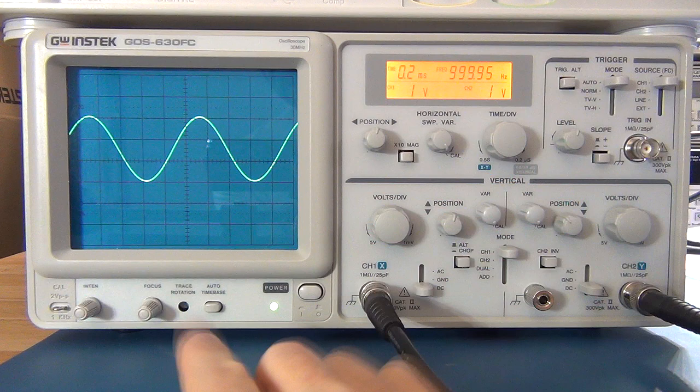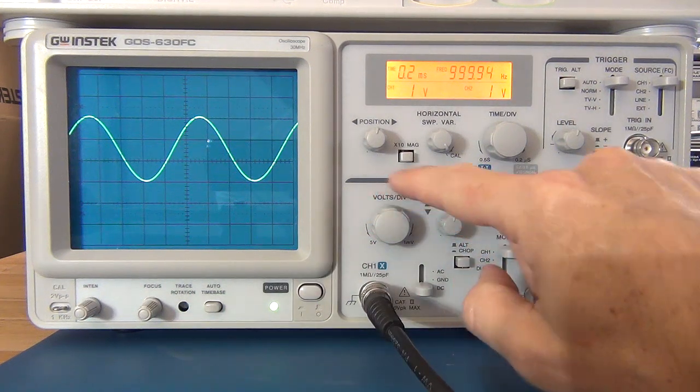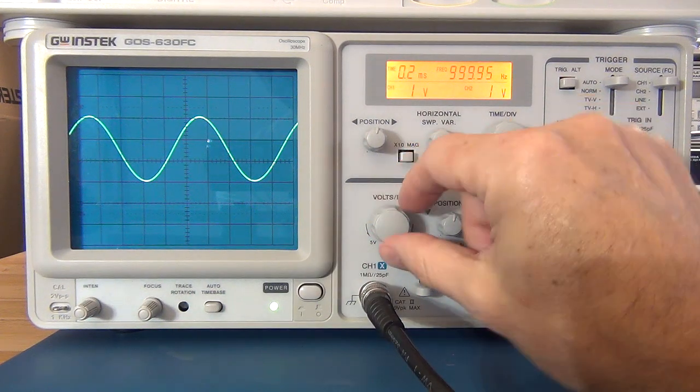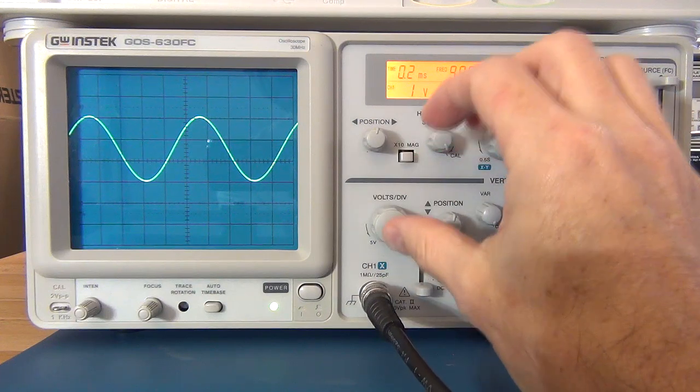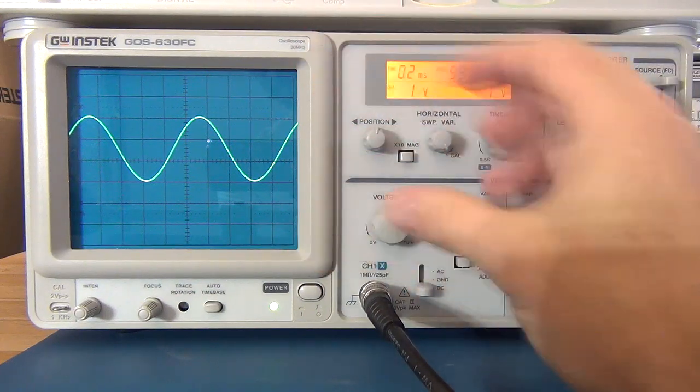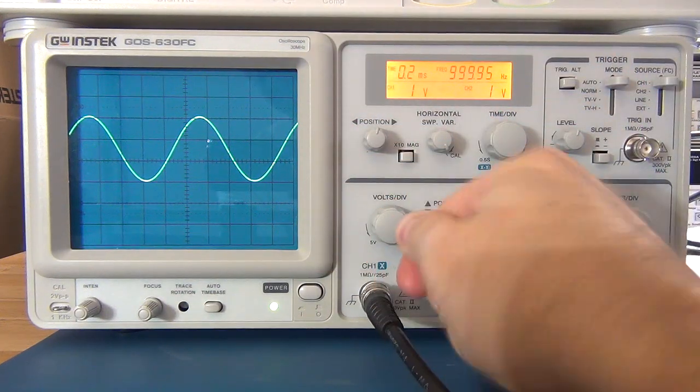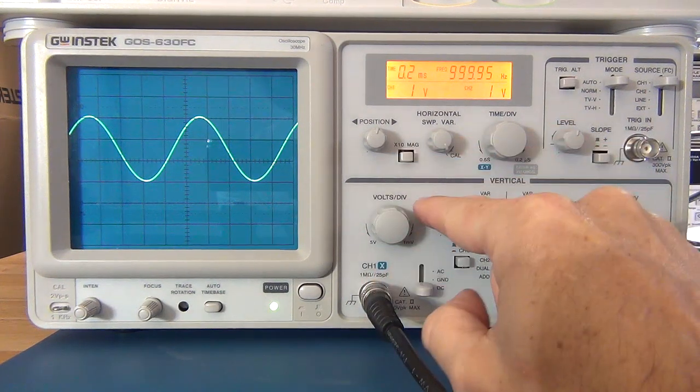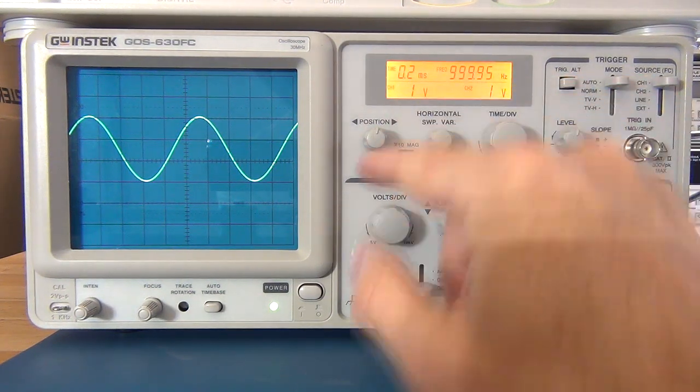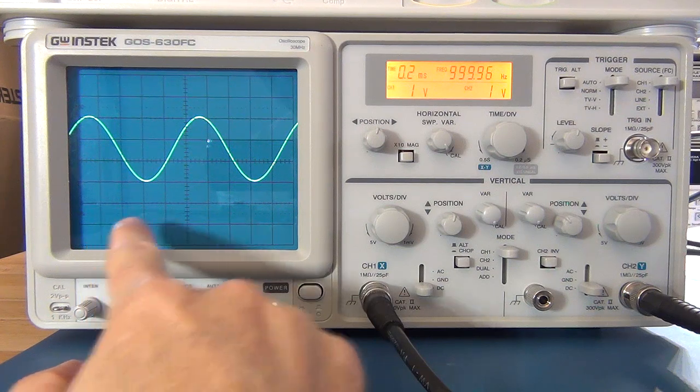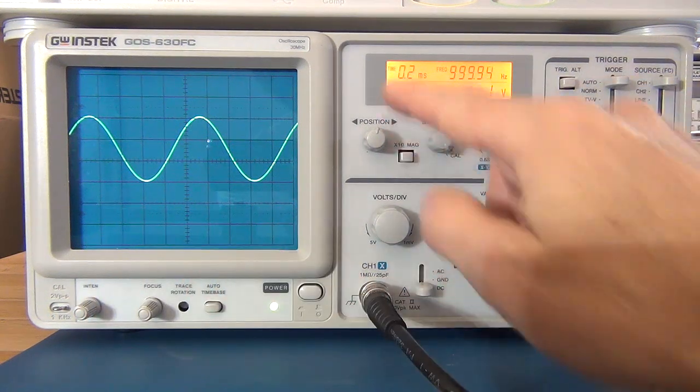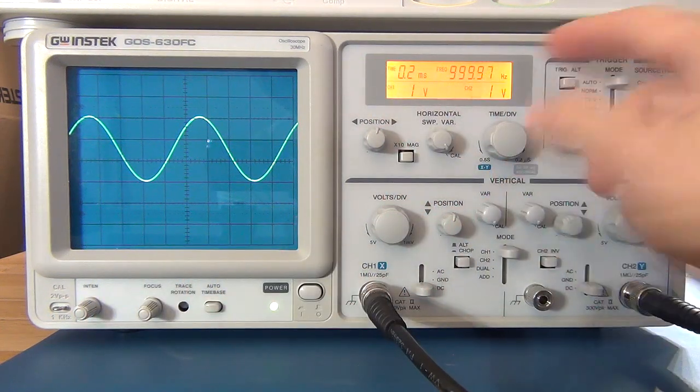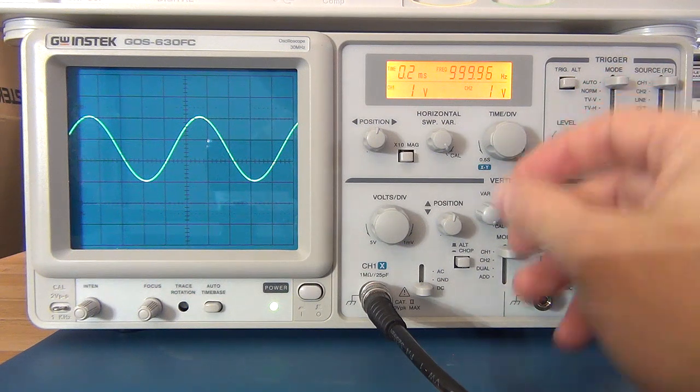On some of the older scopes, you'd have that noted on the actual dials, the analog dials. This has a digital control for an analog scope. But they would literally have analog dials with the readings around them or display them on the CRT. I think this method of having the display here works and is quite functional.